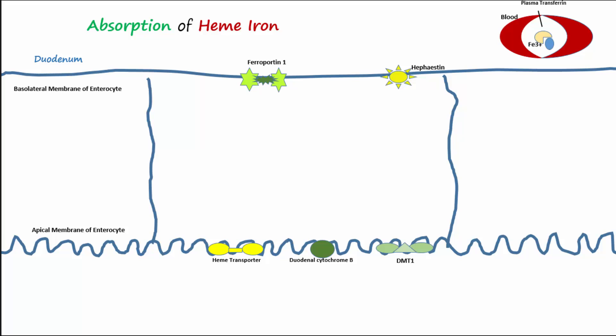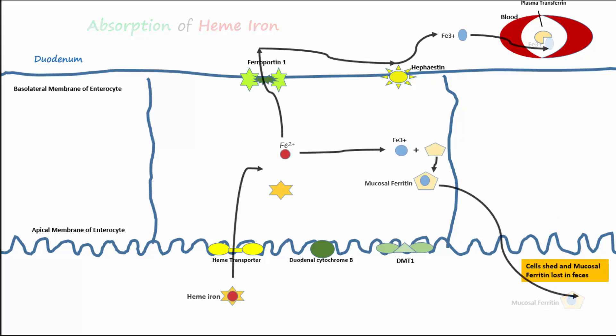The second pathway is for Fe2+ or ferrous iron to be oxidized to Fe3+ or ferric iron and then stored as mucosal ferritin. Mucosal ferritin is then sloughed off into the intestinal lumen as the enterocytes die at the end of their three-day lifespan. Please review this summary now to understand how heme iron is absorbed and processed.